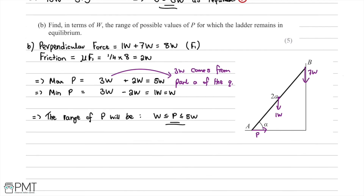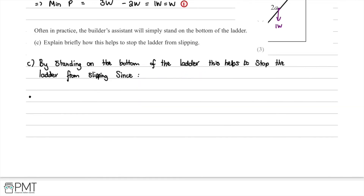This part was also worth 5 marks. The first mark was for calculating 8w as the total perpendicular force. The second mark was for calculating the friction force of 2w. The third and fourth marks were for correctly finding the maximum value of 5w and the minimum value of w. The fifth mark was for correctly stating the range: w ≤ p ≤ 5w.